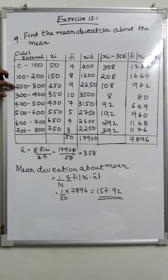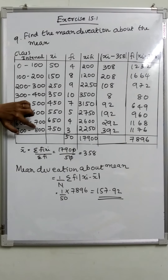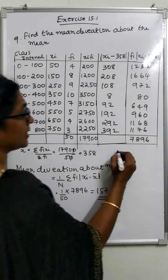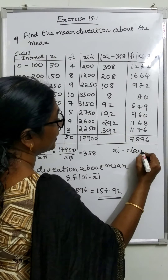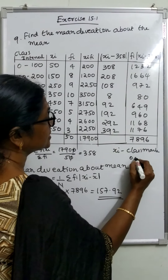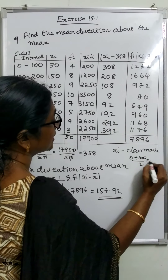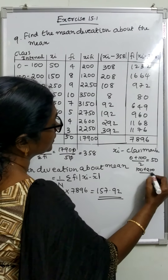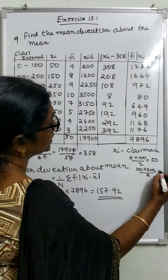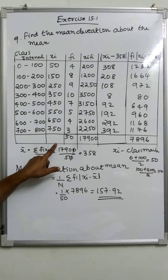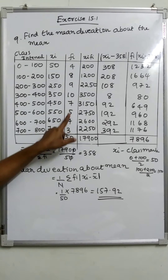Class intervals: 100 to 200, 200 to 300, and up to 700 to 800. Xi is the class mark: upper limit plus lower limit by 2. That is 0 plus 100 by 2, equal to 50. And 100 plus 200 by 2 is 150. The frequency fi values are 4, 8, 9, 10, 7, 5, 4, 3.